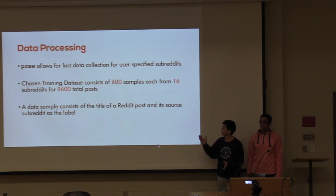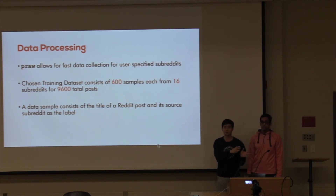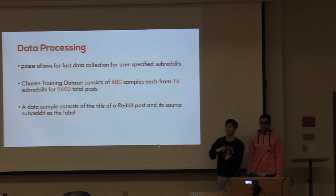A data sample essentially consists of the Reddit post and its title. We chose to use the title of the Reddit post because this allows us to access different communities that are not purely text-based — for example, we can get posts from sports or space, which sometimes contain images, and we want to be able to classify all of them.